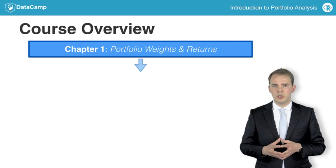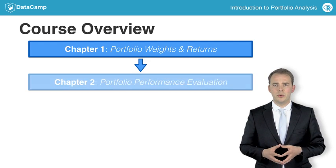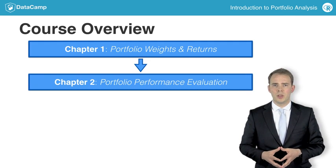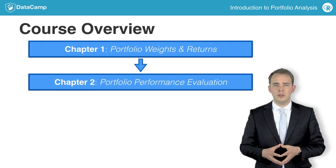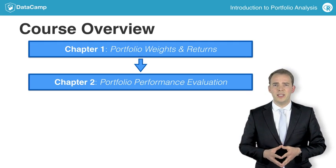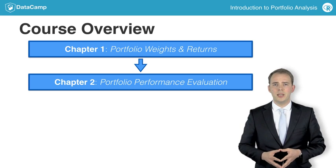In chapter 2, you will learn how to use measures of reward and risk to evaluate the portfolio performance. We will be using average returns, volatility, Sharpe ratio, and even downside risk measures, such as the portfolio value at risk and expected shortfall.